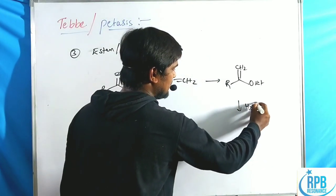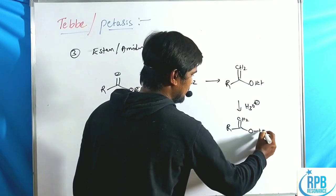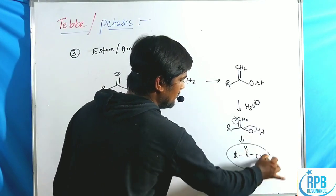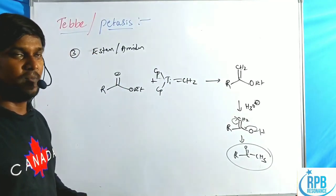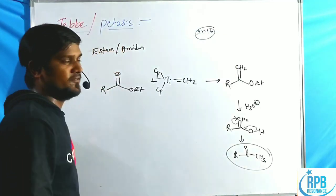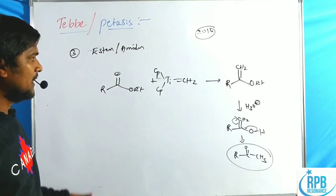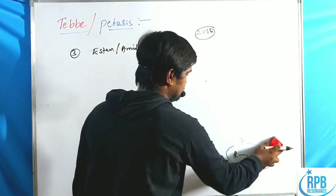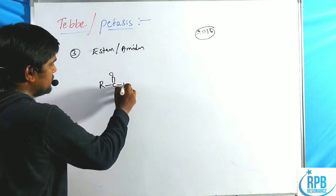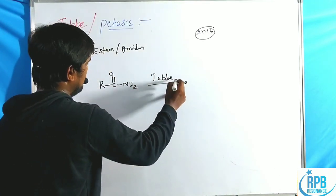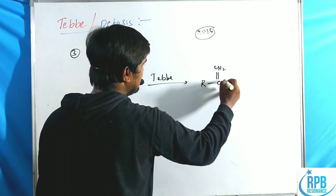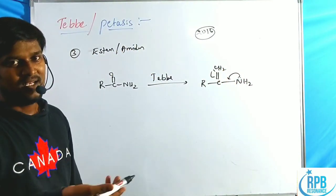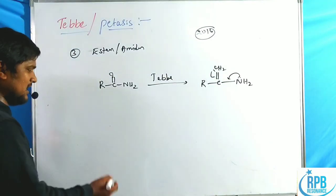Initially, there is no elimination of water in the first step. Subsequently, the intermediate may undergo hydrolysis, giving a CH₂OH group, which then undergoes keto-enol tautomerism to give a ketone product. Similarly, amides (RCO–NH₂) treated with Tebbe reagent produce a C=CH₂ intermediate that can also undergo hydrolysis and tautomerism to yield the corresponding ketone.